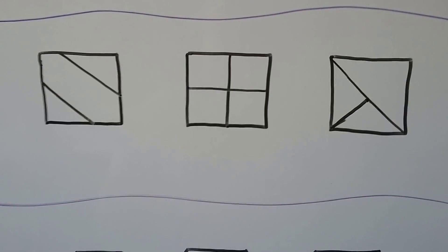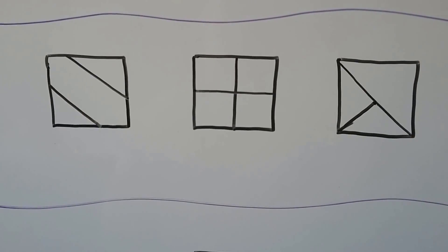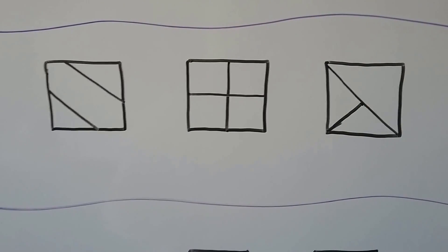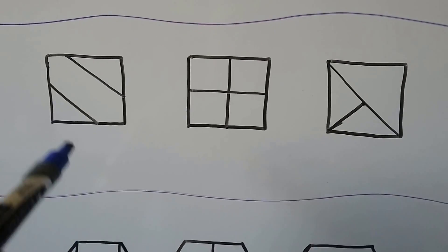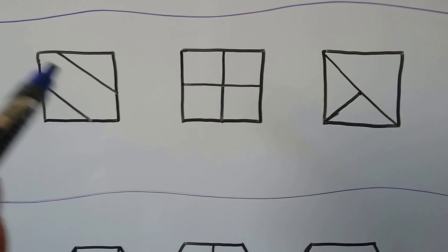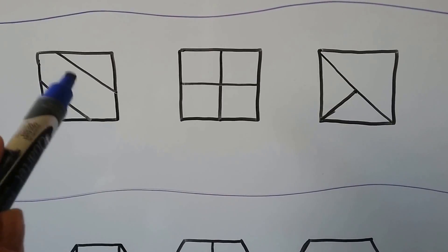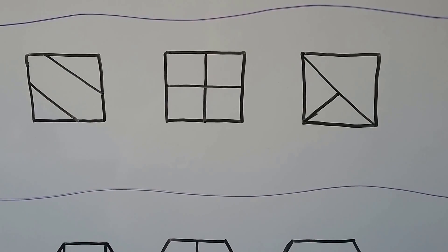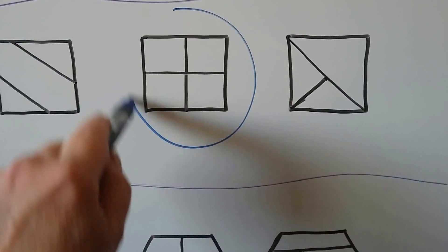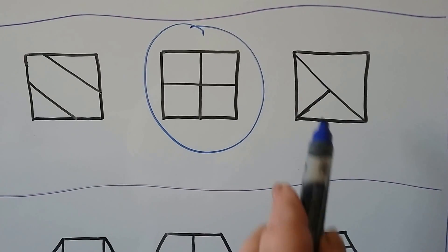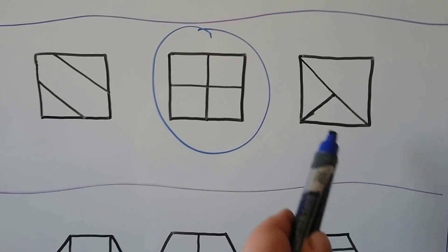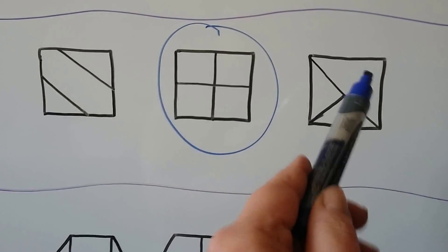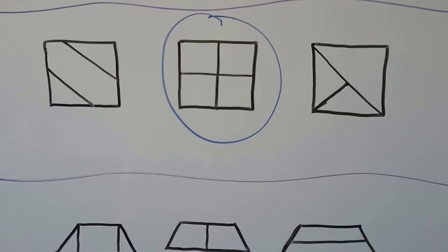What about these squares? This one's split into three parts, but are they equal? If someone got this piece, it would be very small and that person would get a big piece, wouldn't they? So that's not equal parts. What about this square? Yeah, that would be equal parts. And this one — would everyone get the same fair share? No, one person would get a big piece, so that's not equal parts.